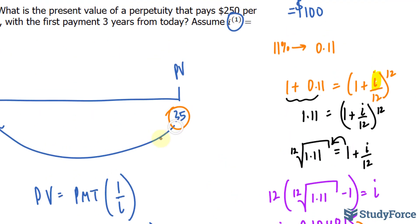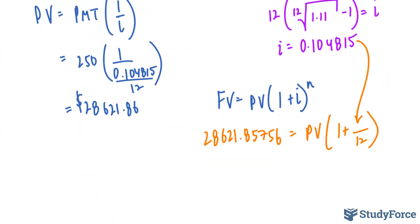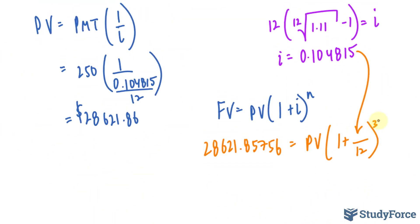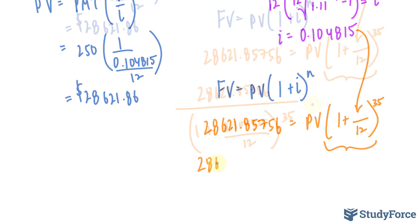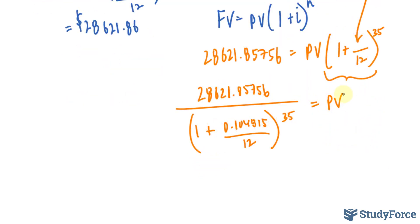And if we're discounting this back to 0, then n should be 35. That's why this number is very critical that you choose it correctly at the beginning. And so we divide both sides by that factor, giving us this expression, and that is equal to PV.